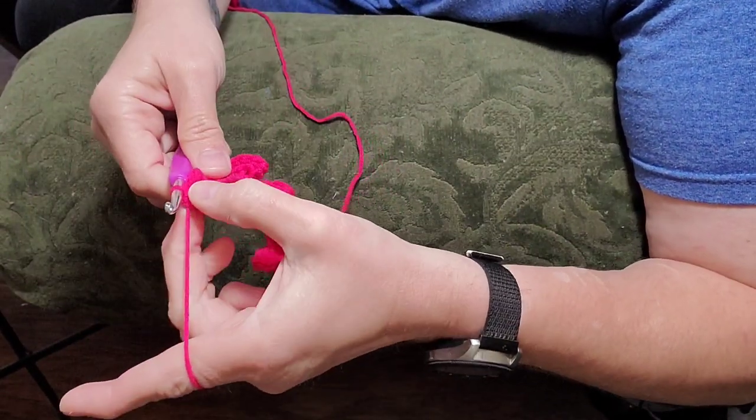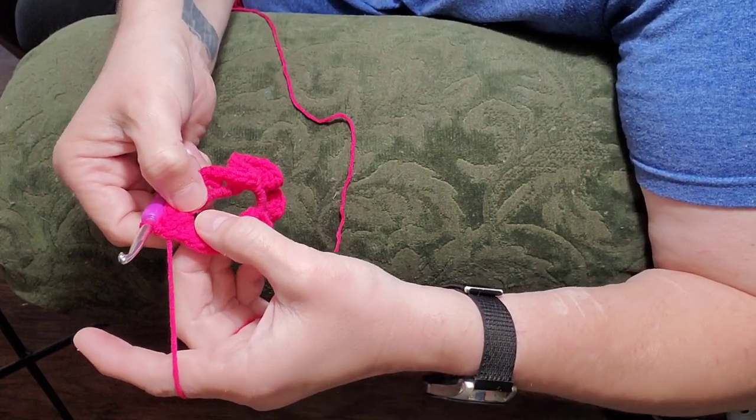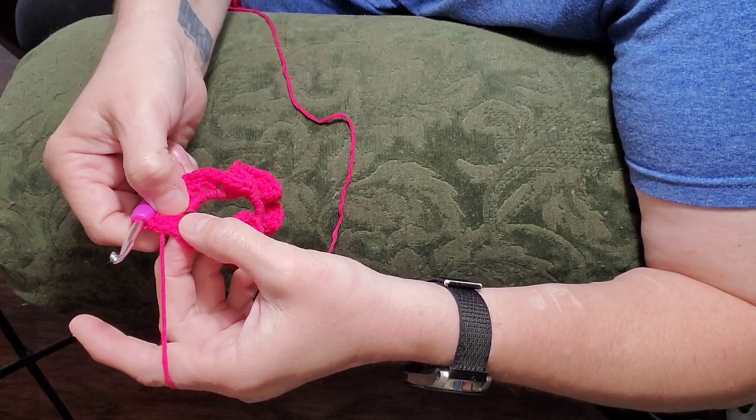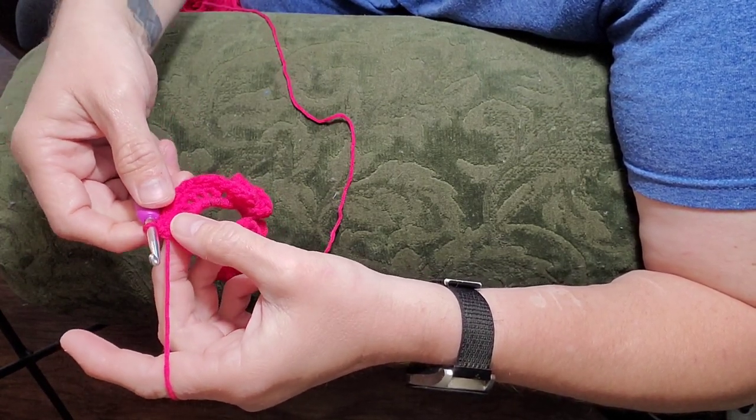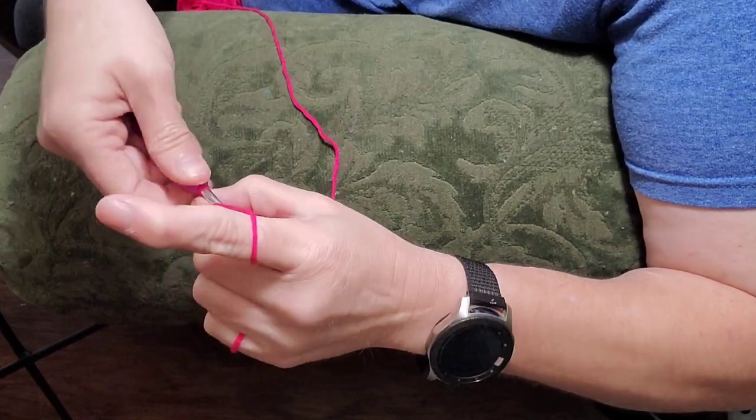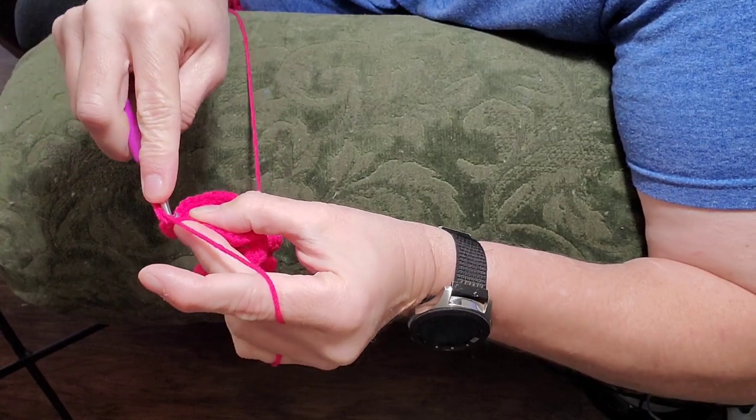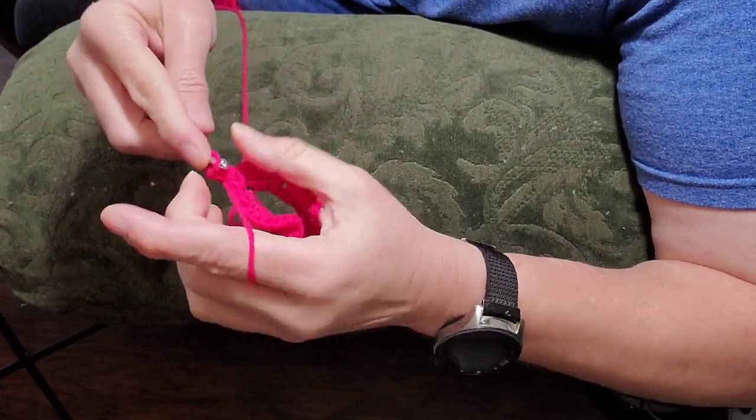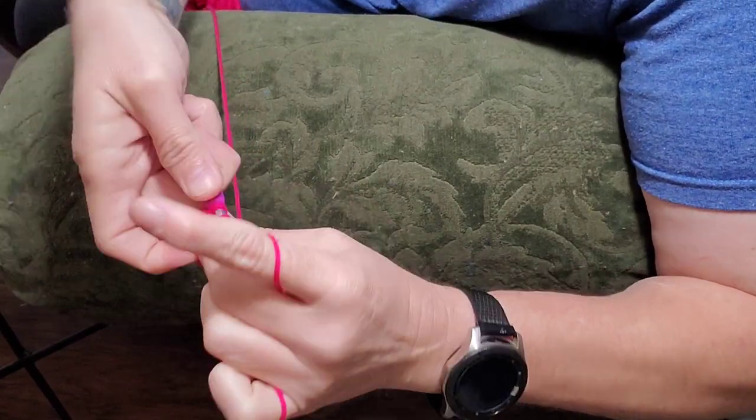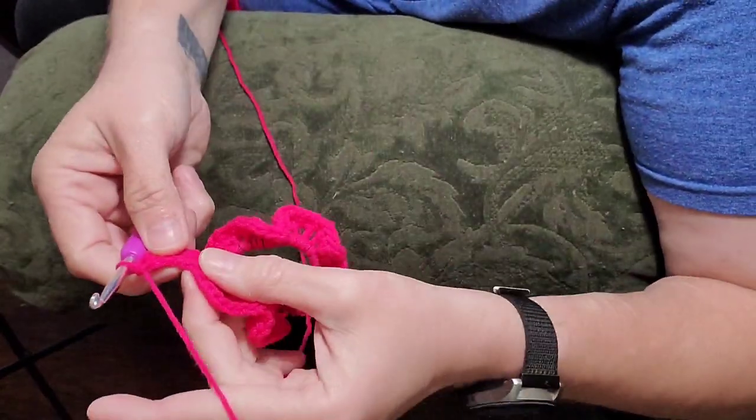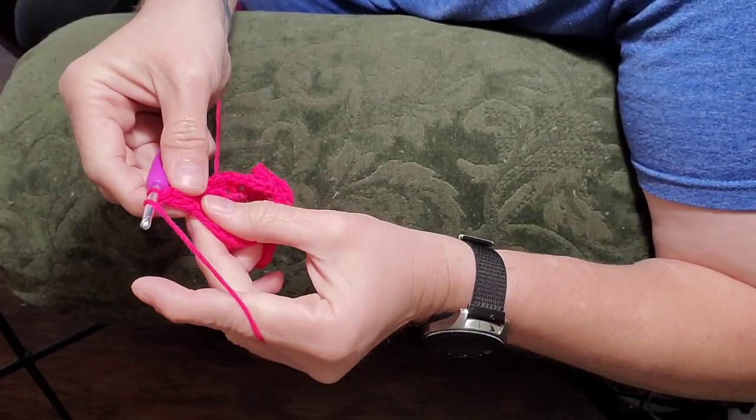So what I'm going to do from here is we've done our row of singles, we've done a row of two half doubles, and now we're going to do a row of three doubles in each stitch. So I'm going to chain three. And then this very first stitch right here, I want to put two doubles in it, not half doubles. And then from here we're doing three doubles in each stitch.